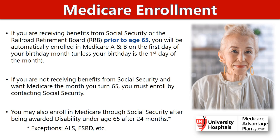How would you enroll into Medicare? If you are already receiving benefits from Social Security or through the Railroad Retirement Board prior to the age of 65, you will be automatically enrolled into Medicare A and B on the first date of your birthday month, unless your birthday is the first of the month. For example, if your birthday is July 20th, your Medicare will begin on July 1st. If your birthday is July 1st, then your Medicare would begin on June 1st.